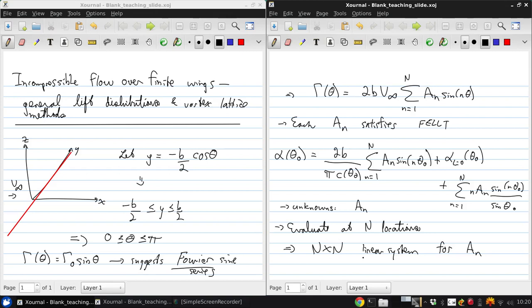And once you have the system of equations solved, so you've got the a sub n, you can then get the circulation distribution.